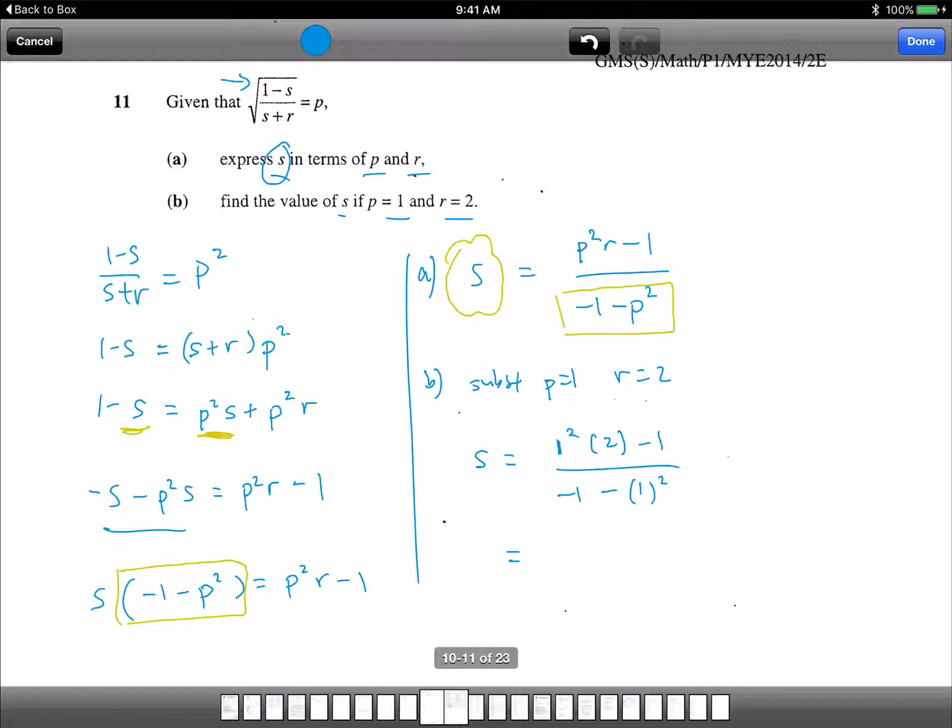1 squared times 2 is 2. So 2 minus 1 is 1. Now the bottom is negative 1, negative 1. So it's negative 2. So that's the answer, negative one half.